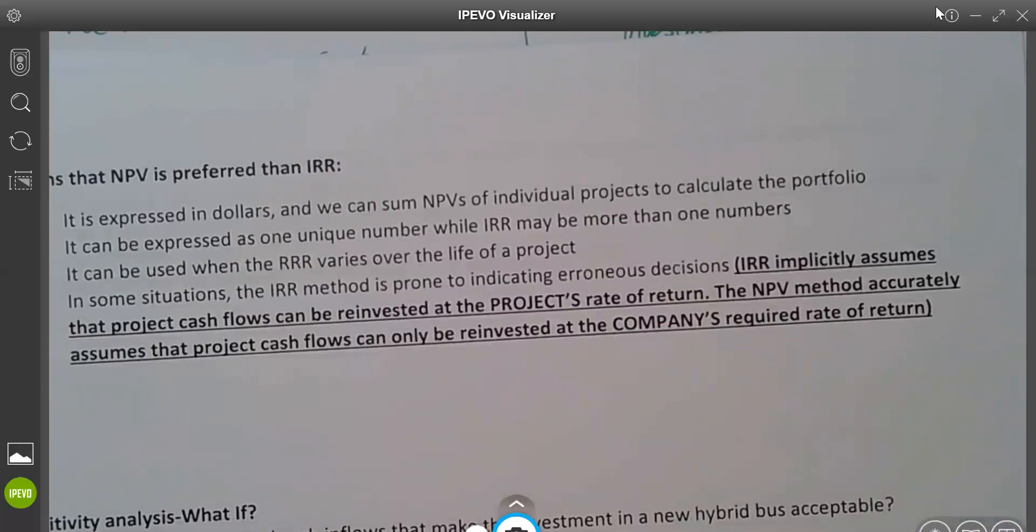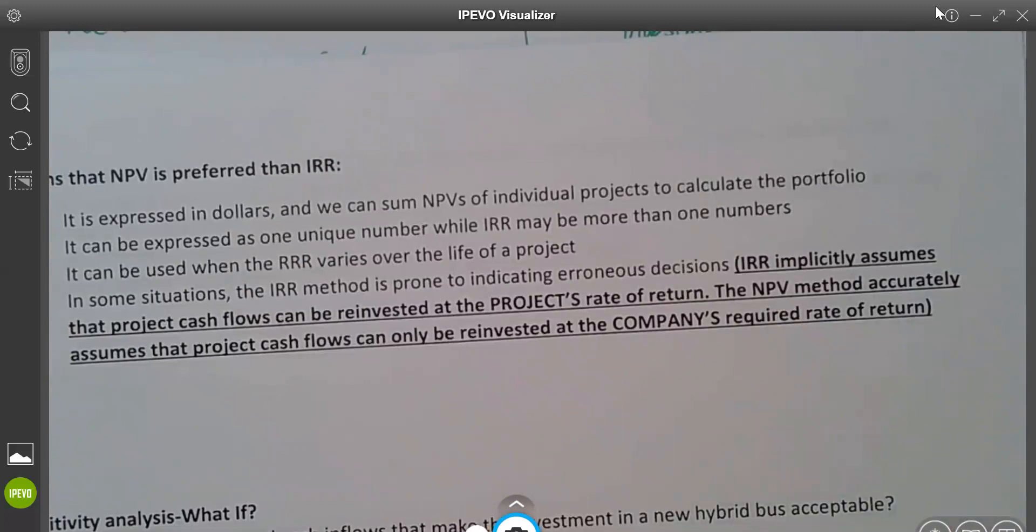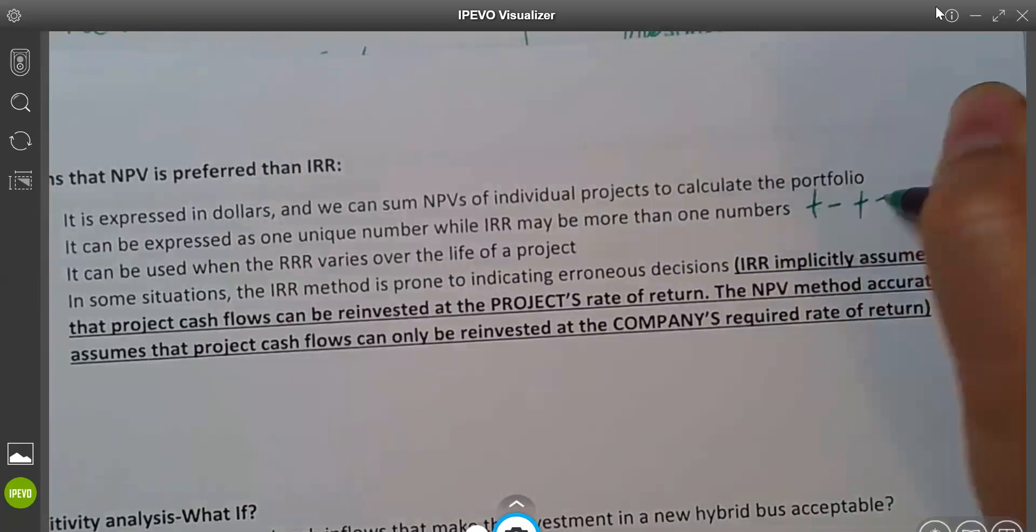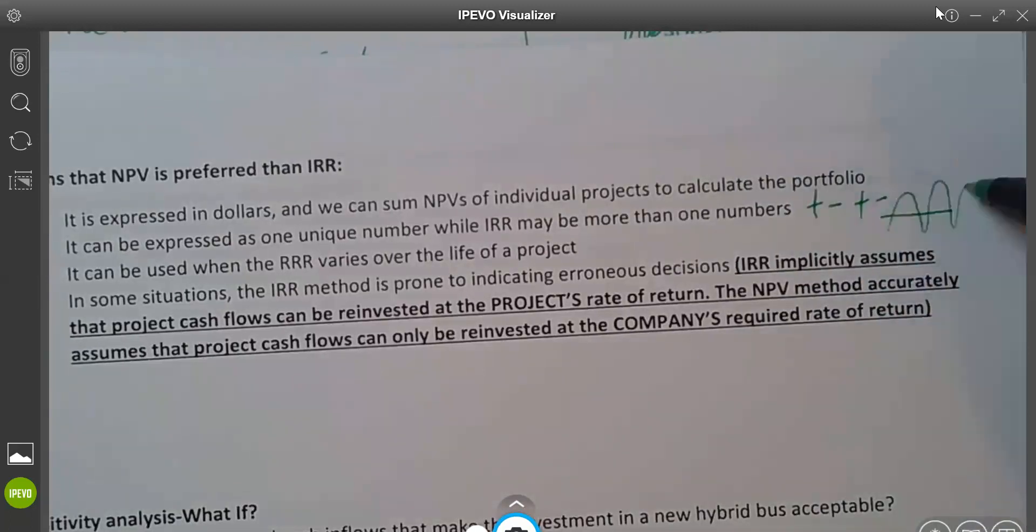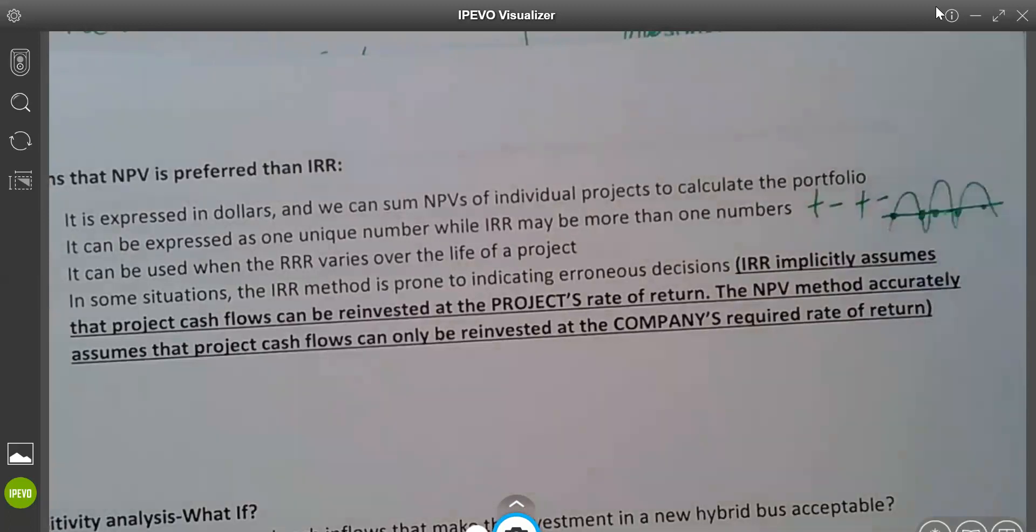Second is NPV is always one number, but sometimes IRR is more than one number. It happens, especially if you have outflow and inflow. What we are doing here in this chapter is at the beginning of the project, you buy something, it's your outflow, and then from that one, you will have inflow, inflow, inflow. But in reality, sometimes you have outflow at the beginning, you have inflow, then you have to invest more with outflow at the end. So you have positive, negative, positive, negative. And then if you draw the line, it's more likely you have different IRRs.